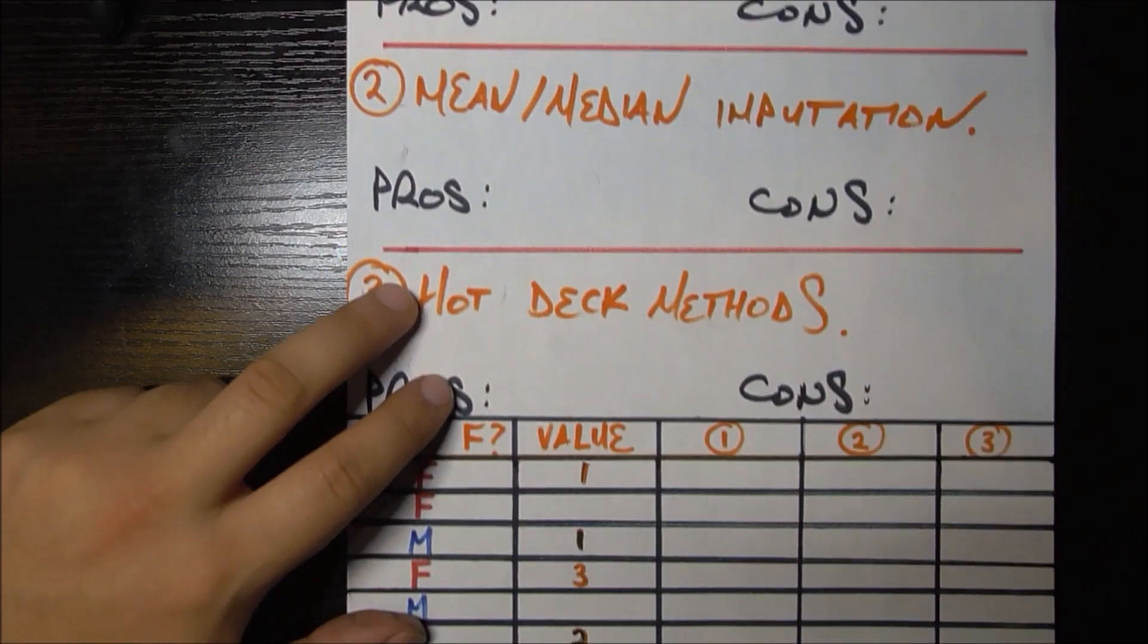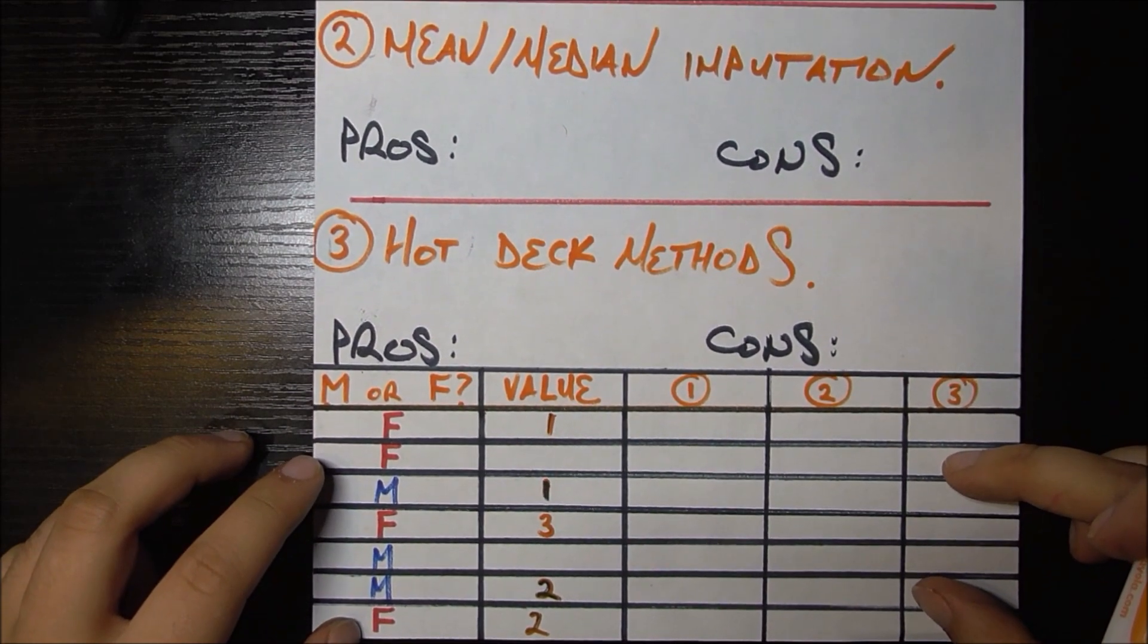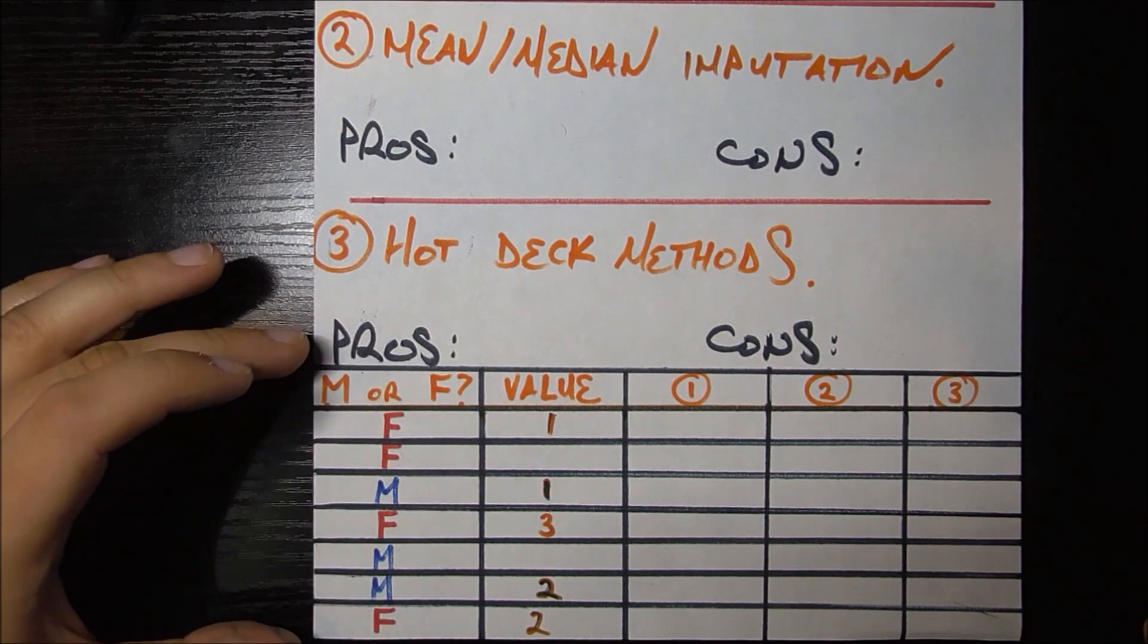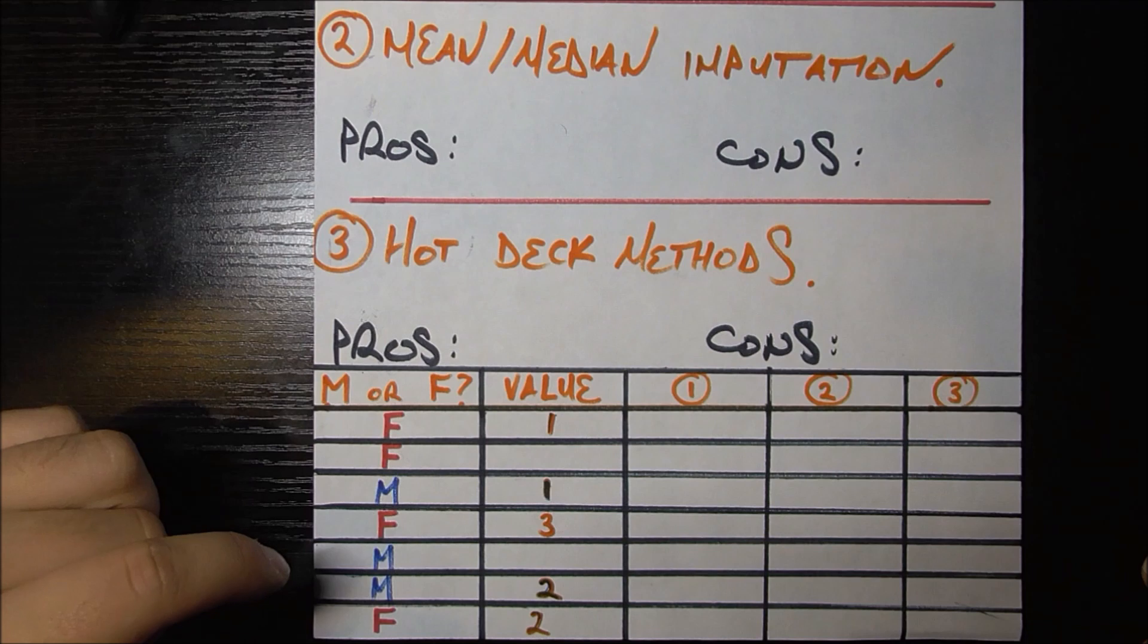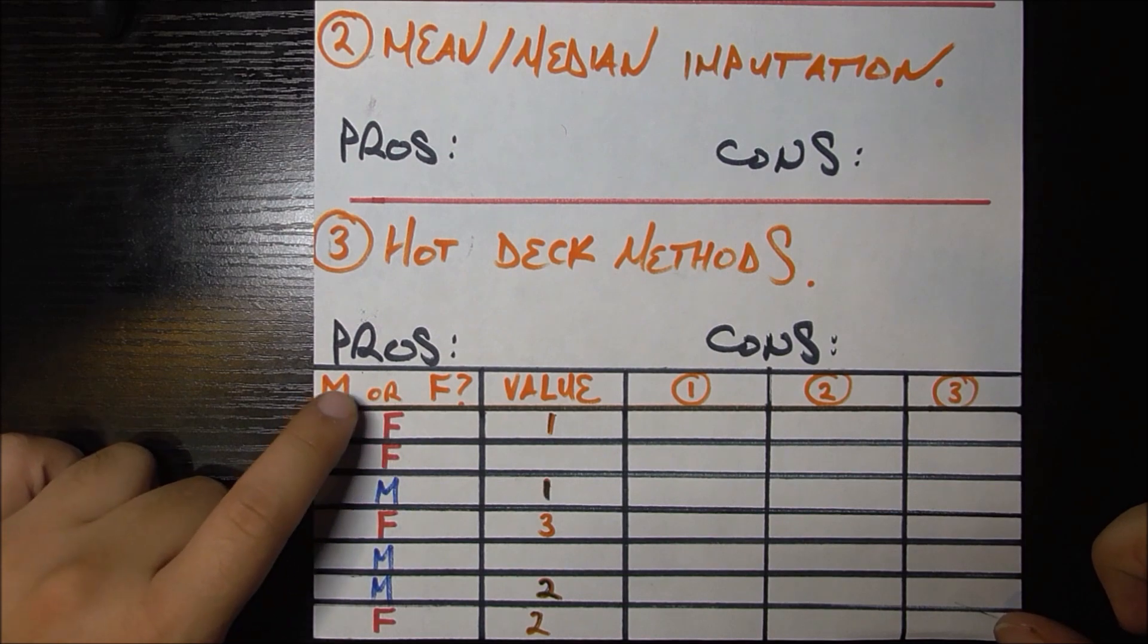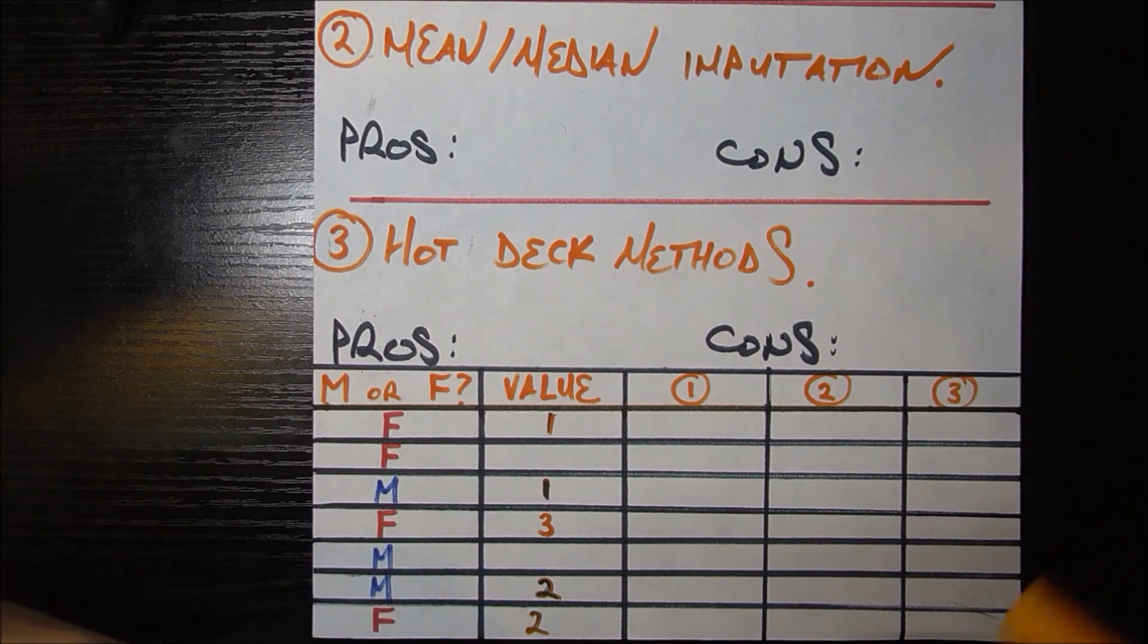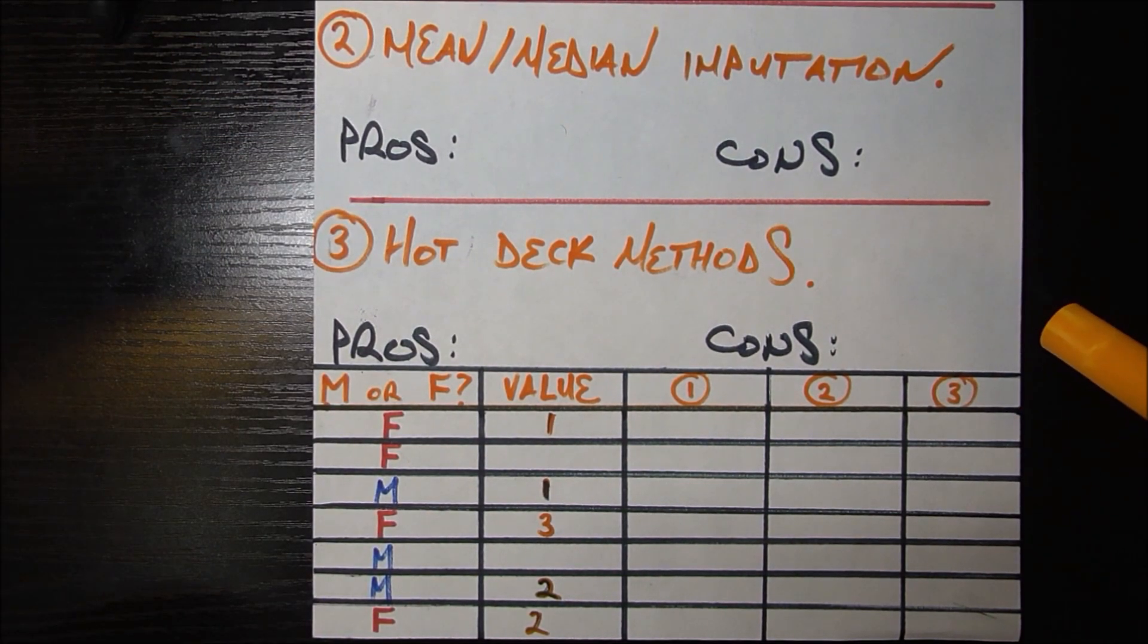Before we get into the methods themselves, let's look at the very small dataset we're going to be using. If you watched the missing data mechanisms video then you know about this kind of example, but if not, just quickly to explain it. This is a dataset where we gave a poll to all the people in town and we asked them first for whether they're male or female, which is either F or M in this first column. And the second thing we asked them is how many overdue library books do you have, because we're doing some kind of study on overdue library books.